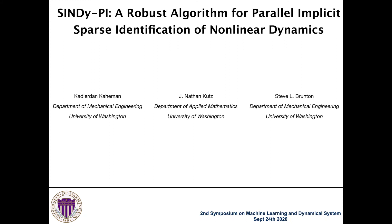Hi everyone, my name is Qadudan Khakharman, a graduate student at the University of Washington, supervised by Professor Steve Broughton. I'm glad to attend the second symposium on machine learning and dynamical systems. Today, I will talk about our recent research project: a robust algorithm for parallel implicit sparse identification of nonlinear dynamics.